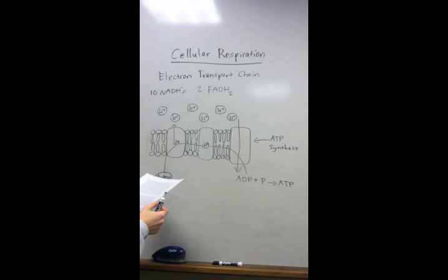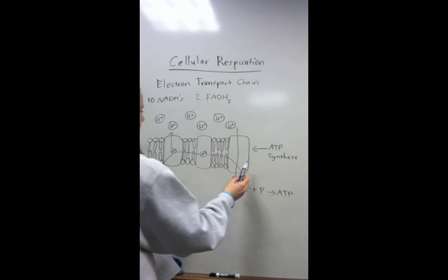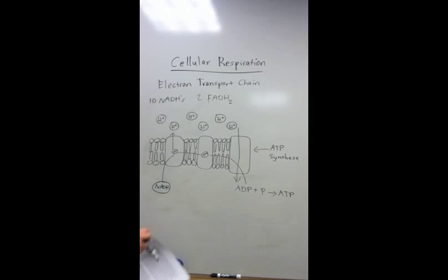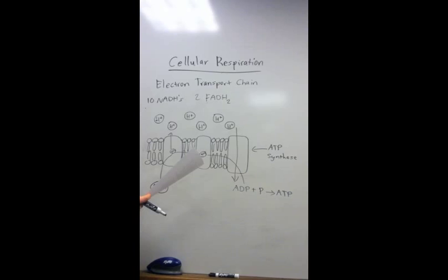So when the hydrogen passes through the ATP synthase, it creates a concentration gradient which causes this to spin and the ADP molecule bonds with a phosphate to create ATP. After this happens, the majority of the ATP is created in cellular respiration. This step of cellular respiration ultimately creates 34 ATP.